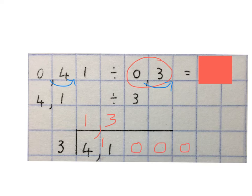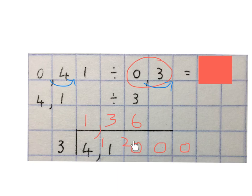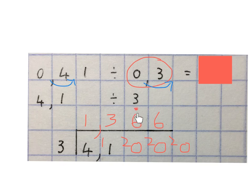We add in extra zeros as needed. 3 goes into 11: 3 times, 3 times 3 is 9, with 2 remaining, so that becomes 20. 3 goes into 20: 6 times, 6 times 3 is 18, with 2 remaining. Then 3 goes into 20 again: 6 times, 6 times 3 is 18, with 2 remaining. The moment you see the pattern repeating, you may stop — it's going to be 6 forever. Put a dot above the first 6 that started repeating. The final answer is 1.36 recurring.